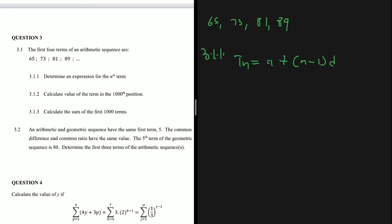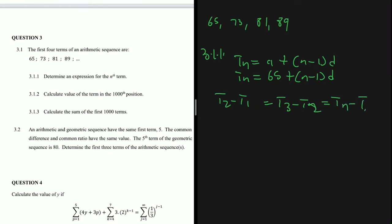Here, a is always the first term, so tn = 65 + (n-1) × d. Now let's find d, the common difference. You can find d by computing t2 minus t1, or t3 minus t2 — essentially the difference between two consecutive terms. Taking t2 minus t1: 73 minus 65 gives us d = 8.